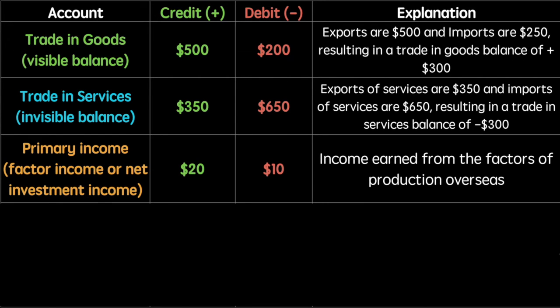The primary income account includes factor income, which is also called net investment income. This is the income earned from investments overseas minus the income paid to overseas investors. We can earn income from investments such as investments in businesses overseas, loans to foreign entities, and rental income from properties abroad. There are also payments to be made to non-residents for the same purpose. The balance of this account is positive $10.